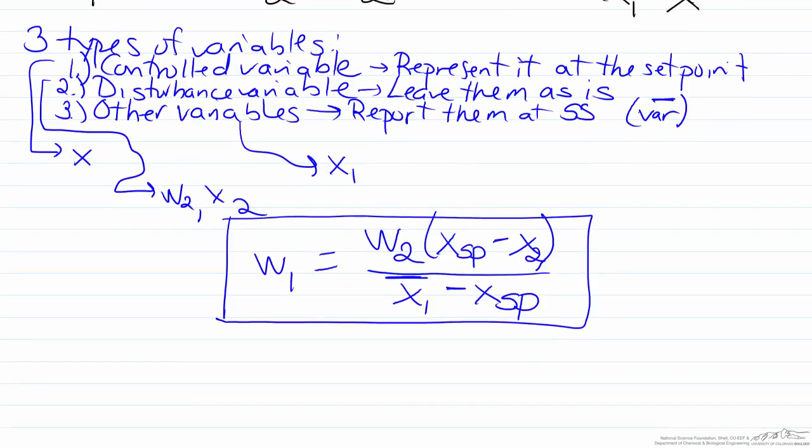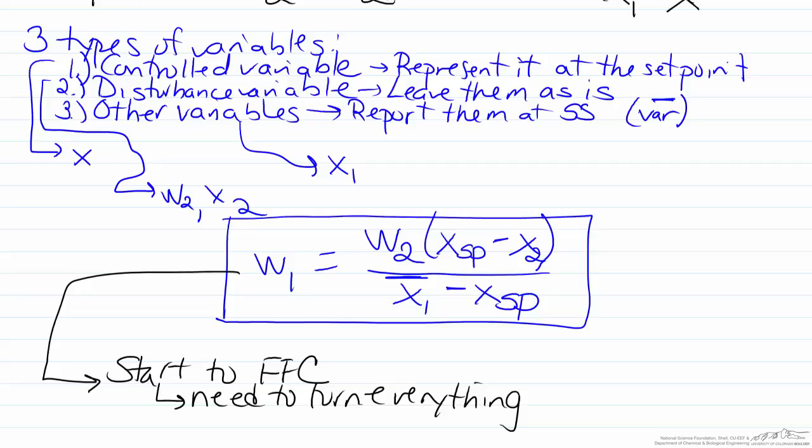An important point is this represents a start to the feedforward controller. What is left is we need to turn everything into signals, because remember that transmitters and control schemes don't report back fifty gallons per minute, they report back particular signals: twenty percent transmitter output, forty percent transmitter output, etc.